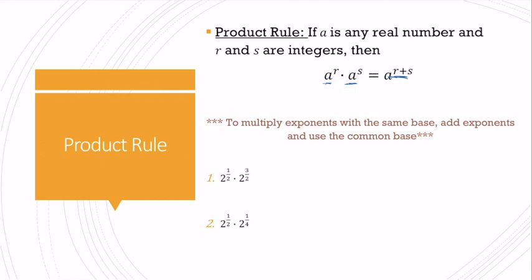So here, I have 2 to the 1 half times 2 to the 3 halves. That means I have 2 to the 1 half plus 3 halves. That gives me 2 to the 4 halves, which is 2, 4 divided by 2 squared, which is 4.